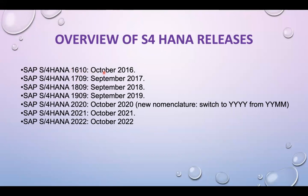SAP named releases based on the month and year, so 1709 means September 2017, 1809 means September 2018, and 1909 means September 2019. From 2020 onwards, SAP made changes because from 2016 to 2019 there were significant differences, and they kept adding certain new functionalities. So they stopped mentioning the month. The new nomenclature switched to year only, from the YYMM format.